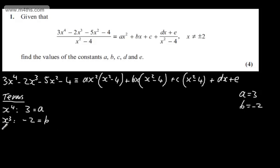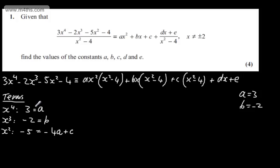If we now look at terms in x squared: on the left we have minus 5, and on the right we're going to have minus 4a plus c. We already know that a is 3, so we can write minus 5 is equal to minus 12 plus c, which gives us c equals 7.